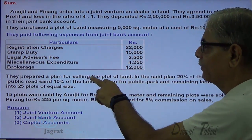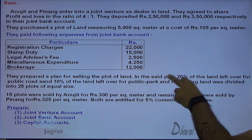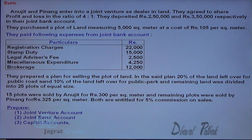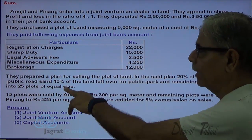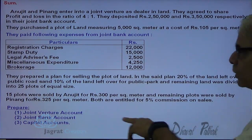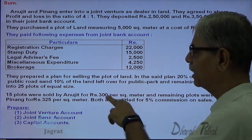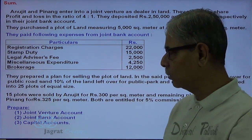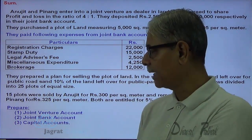They prepared a plan for selling the plot of land. In the said plan, 20 percent of the land was left for public routes and 10 percent for public park, and the remaining land was divided into 25 plots of equal size. 15 plots were sold by Anujit for rupees 300 per square meter and the remaining plots were sold by Penang for rupees 325 per square meter. Both are entitled to 5 percent commission on sales. Prepare joint venture account, joint bank account, and partners' capital accounts.